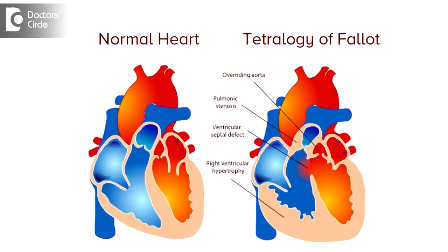Why this develops is because there is no blood going into the pulmonary artery. Most of the blood is going into the aorta. Even a drop of blood is not entering the pulmonary artery. That's why the child experiences TET spells or cyanotic spells.